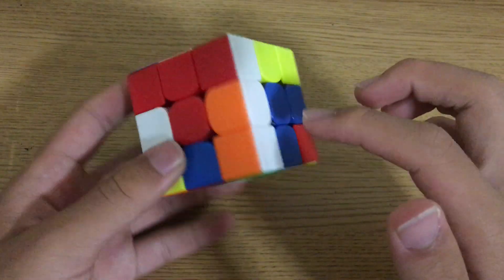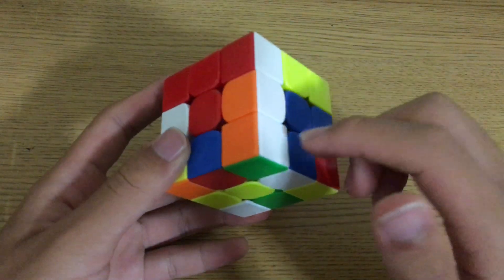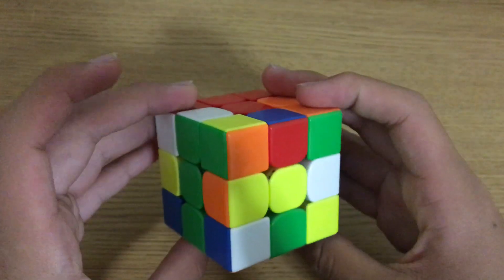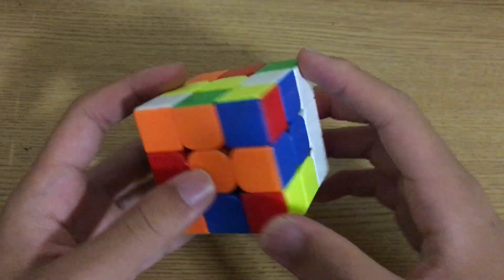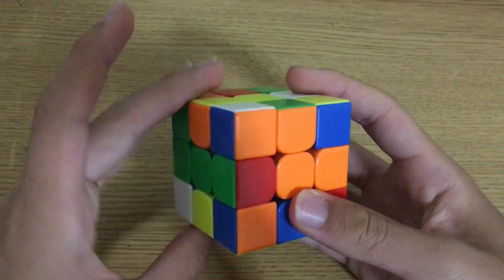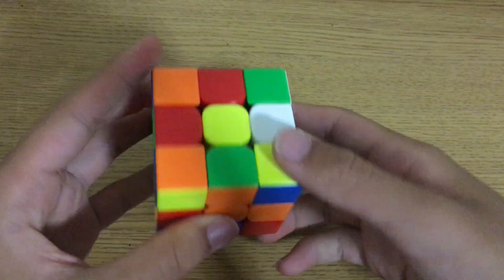His cross pieces are here, here, here, and here, and we also notice this block which will correspond to this edge. Now if you notice, we will solve the cross normally without any consideration of the X cross. We will just solve this edge and then solve these two like so.